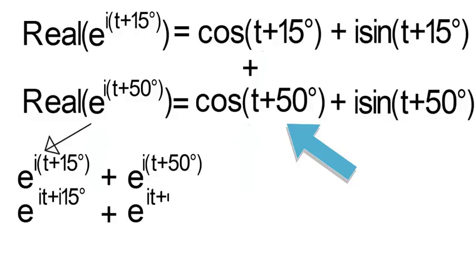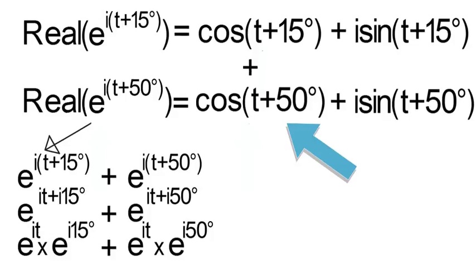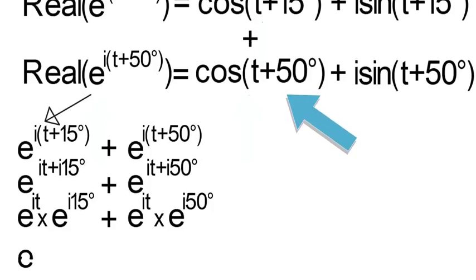Then we have an exponent with two separate terms separated by addition. Meaning if you remember your rules of exponents you can separate that into multiplication with e as the base and the two separate components in each of the exponents. You can do that for the other one too and since they both have an e to the it here you can factor that out and the inside is something you can solve using Euler's formula but just plugging in numbers now.